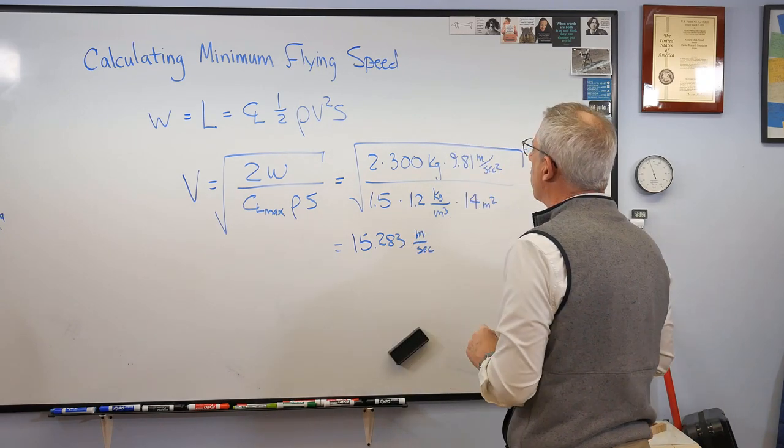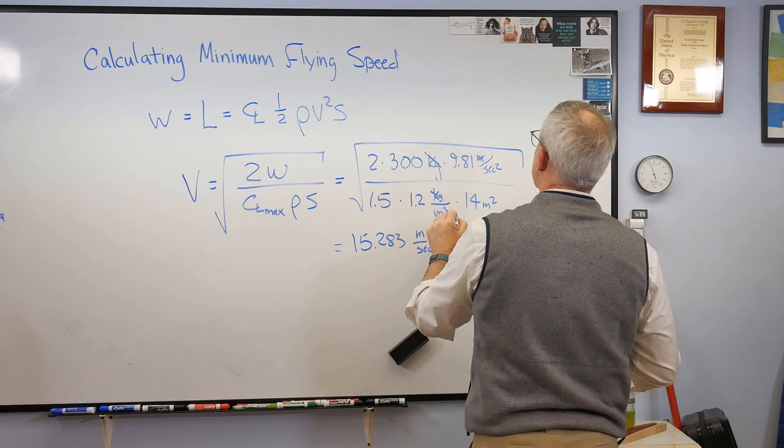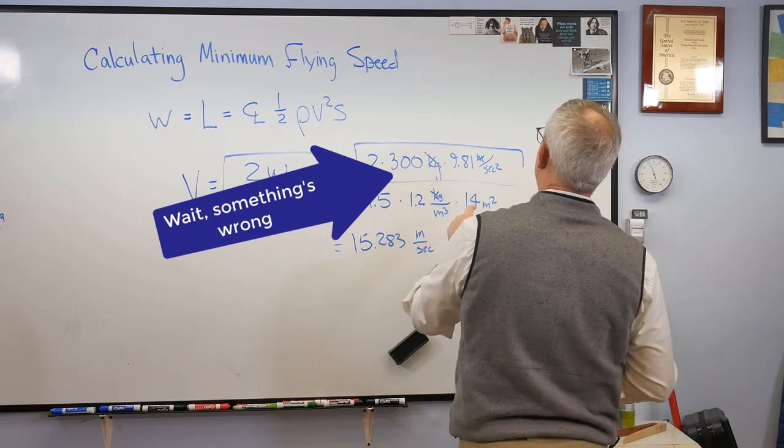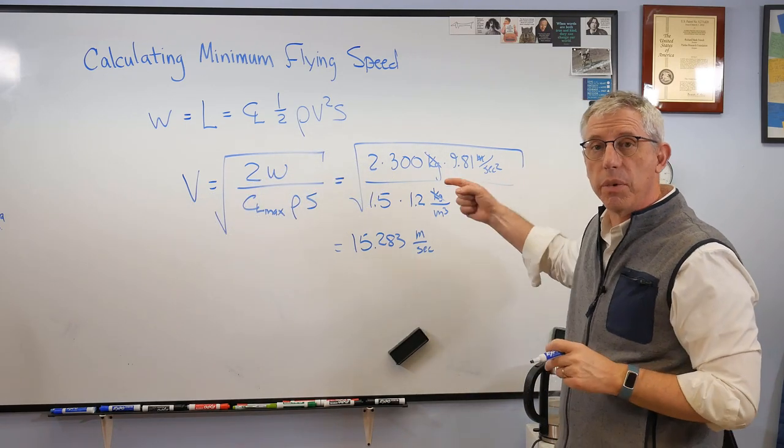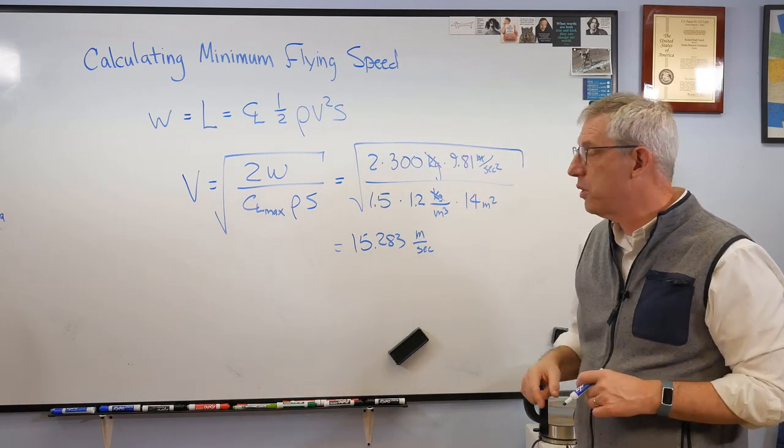And of course, the units all work out here. Kilograms cancel out. Let's see, meters. That cancels out. That cancels out. Yeah, we're going to get meters squared per second squared is how this is going to work out. So it'll be meters squared per second squared. And then you take the square root, you get meters per second.